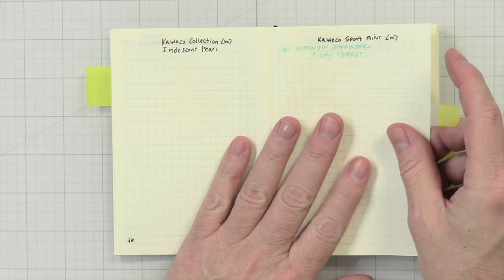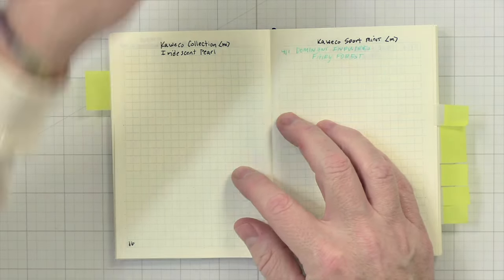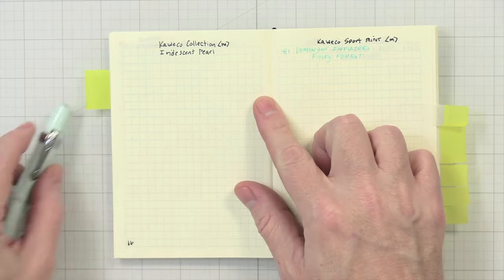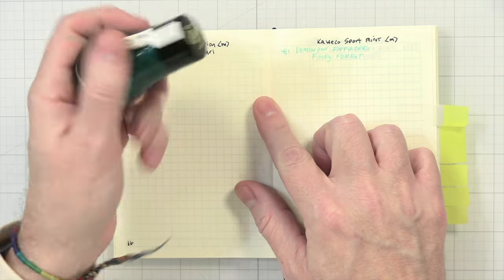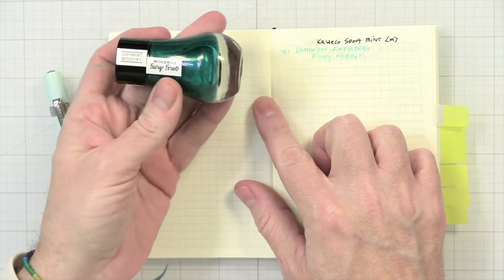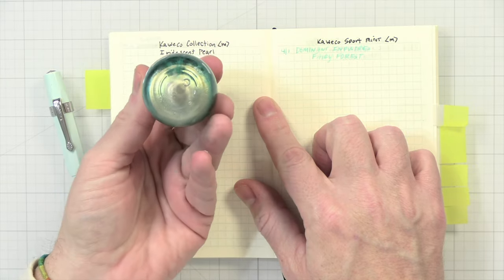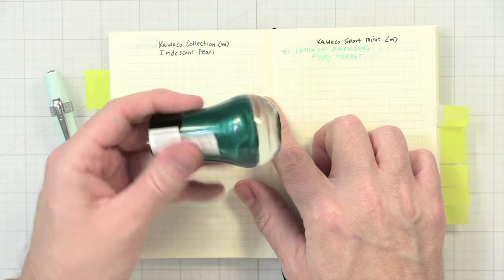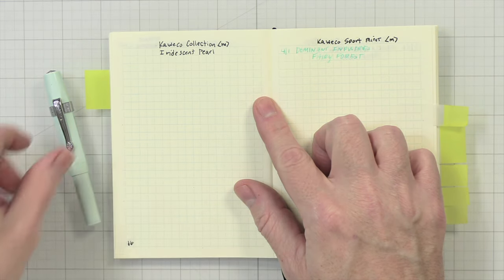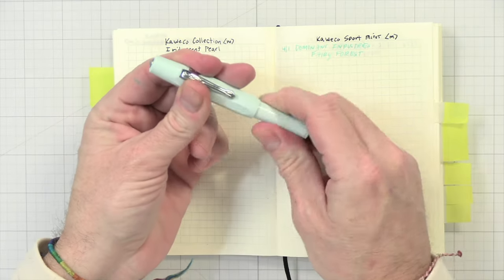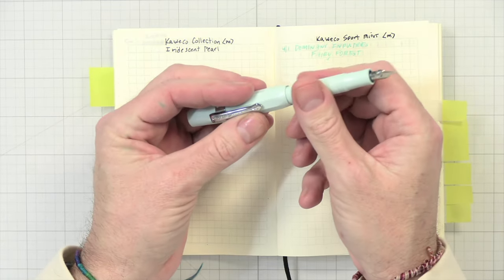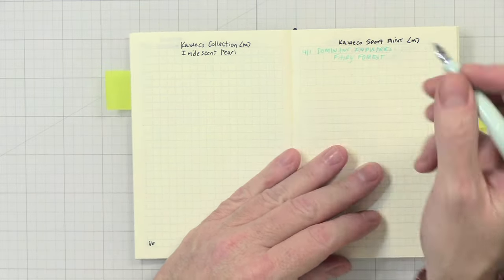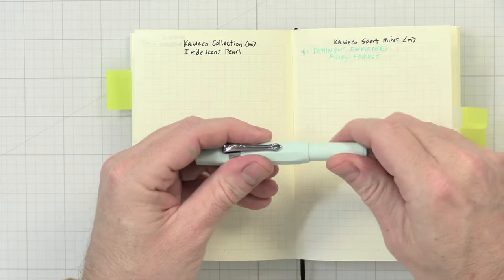The next pen is the Kaweco Sport Mint, and that is this little beauty here. So cute and adorable. I love this guy. And I have paired this up with the Dominant Industries Fairy Forest. This is kind of like a teal-ish color. It has some shimmer in it, like some silver greenish shimmer in it. This is like a pocket pen. So you just unscrew it and then cap it, and then you have this little itty bitty pen that is so cute.